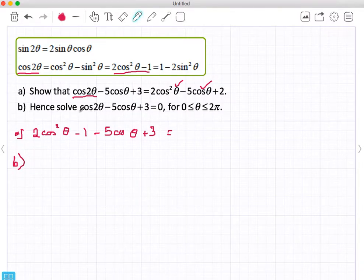So B, hence solve. Now again the trigger word is hence. We're solving this equation but we're actually going to use this. And the reason is this is a quadratic equation.